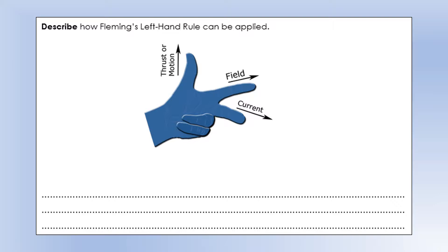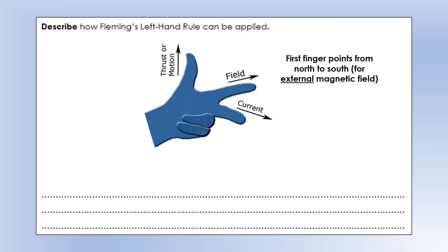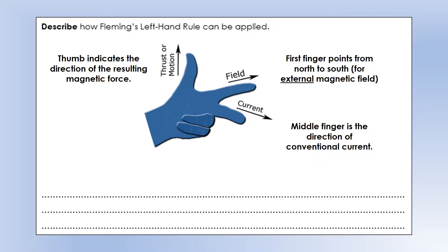Your first finger points directly forward, your middle finger should point to the right of your first finger, and your thumb should be perpendicular to both of them. Each of the thumb and fingers represents something, and we're going to try and line it up with a scenario.